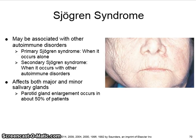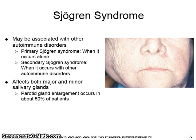Sjogren's syndrome may be associated with other autoimmune disorders. Primary Sjogren's is when it occurs alone, and secondary Sjogren's is when it occurs with other autoimmune disorders. It affects both major and minor salivary glands. Parotid gland enlargement occurs in about 50 percent of patients.